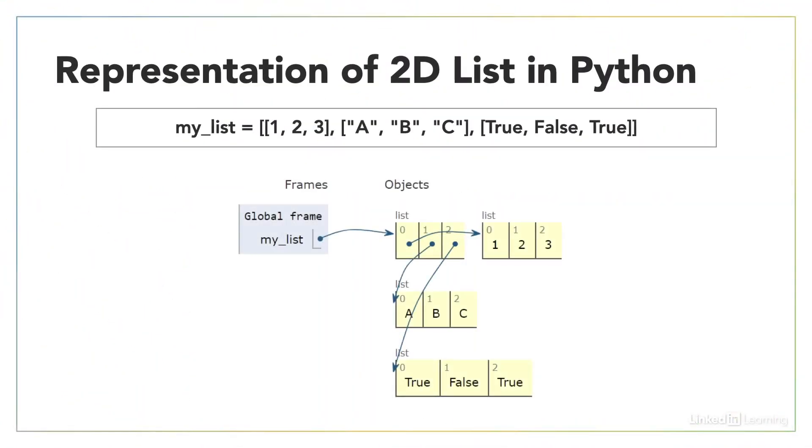A 2D list can be thought of as a list of lists. As with 1D lists, in Python the elements can be of mixed type, although this is fairly uncommon.